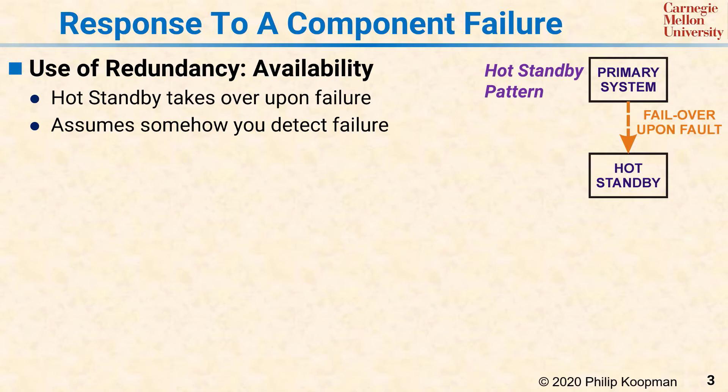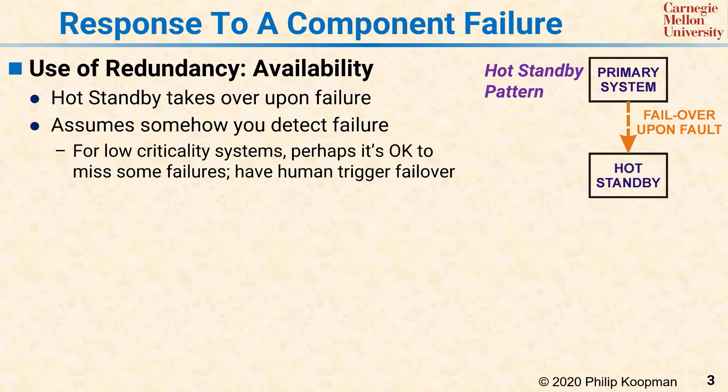However, some failures can be much more difficult to diagnose and might be missed by an automatic failover system. This use of ordinary redundancy for failover works pretty well for low-criticality systems in which the risk of an occasionally missed failover is more than offset by the high fraction of times that the failover will work properly—especially if a human can step in to trigger the failover if something unusual happens.